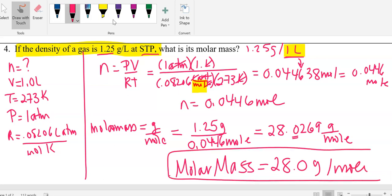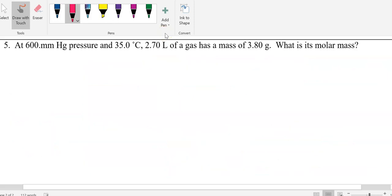The ideal gas law allows you to do some pretty cool stuff. So now we're going to read one more problem. At 600 millimeters mercury of pressure and 35 degrees C, 2.7 liters of a gas has a mass of 3.80. What is its molar mass? Once more, we're going to need to solve for N.